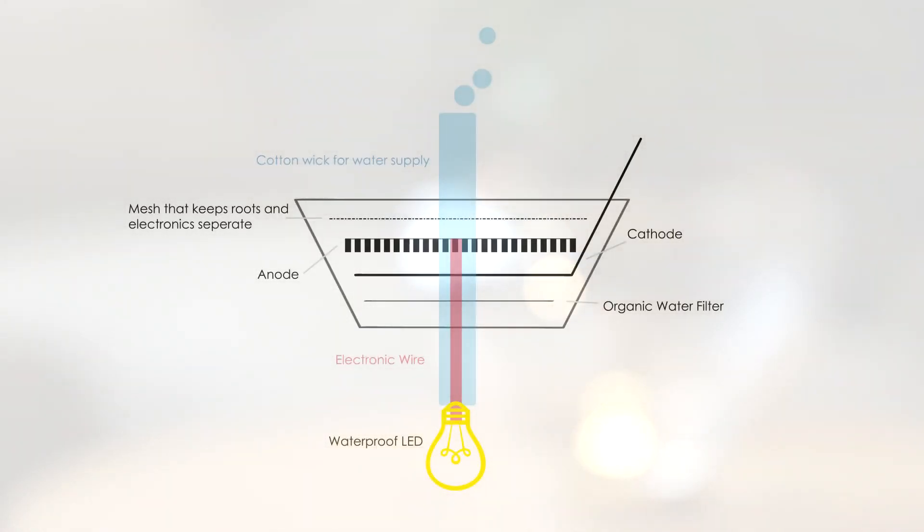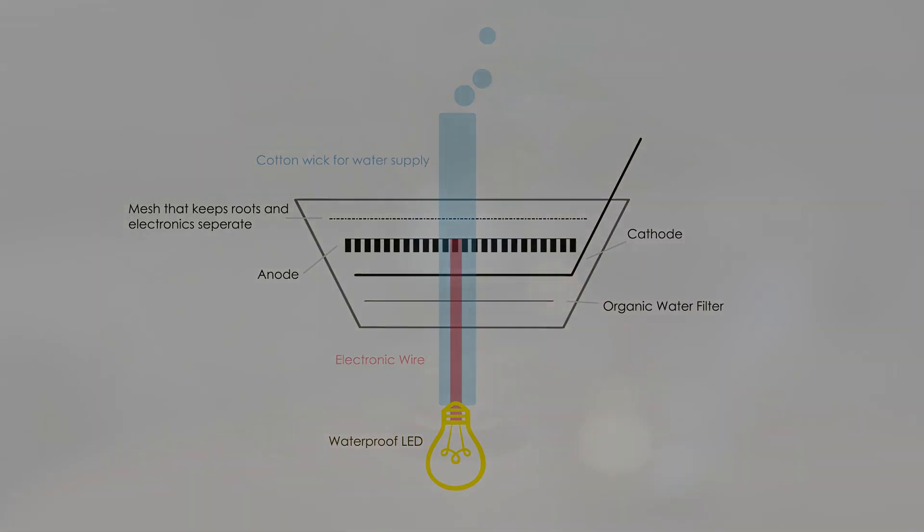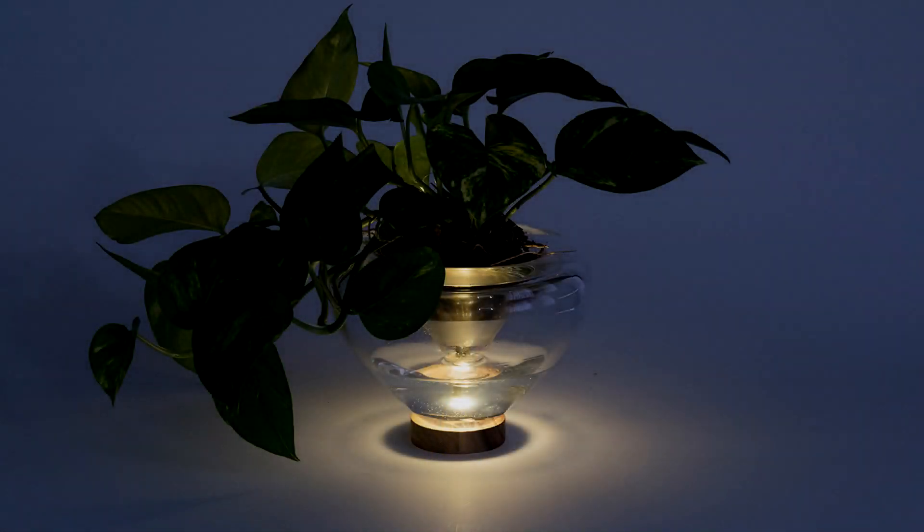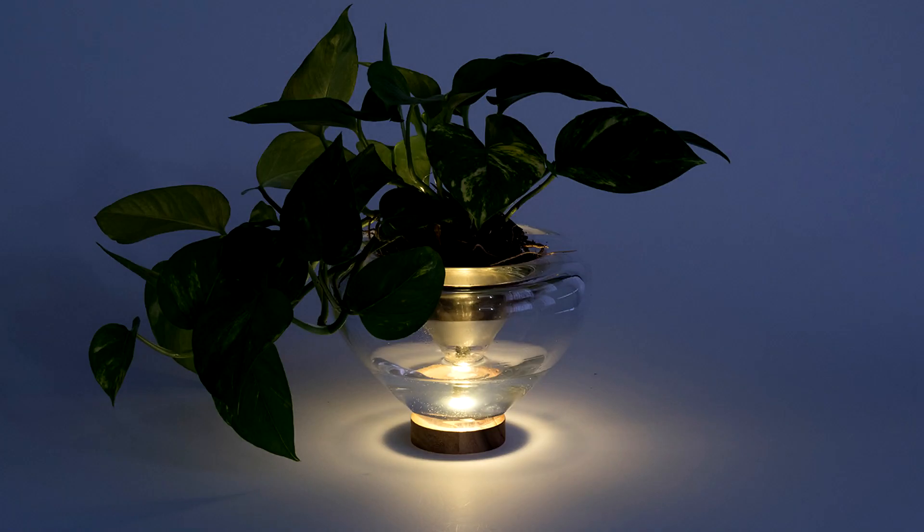The electronic component of the kit is placed in the bell-mouth part of the glass container, in a way that the LED light is submerged in the water that is created in the biochemical reaction. In this position, the effect of the light gets enhanced by the water and interesting shadows are cast around the object.